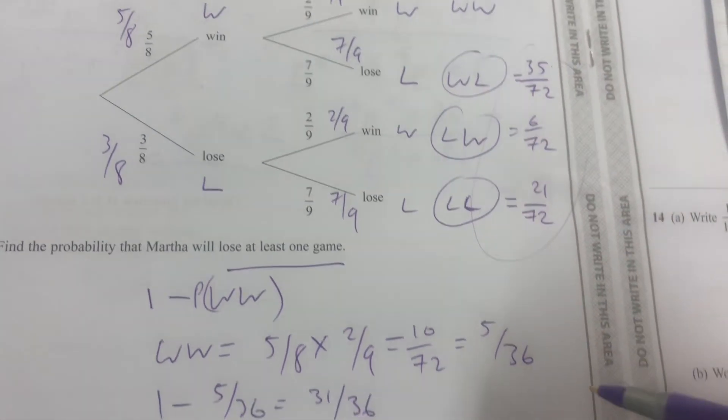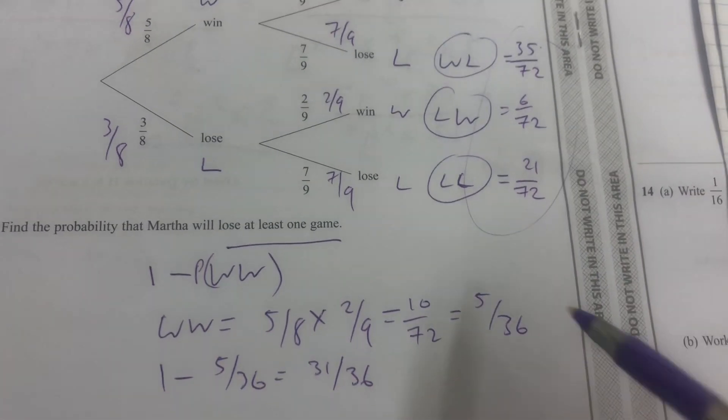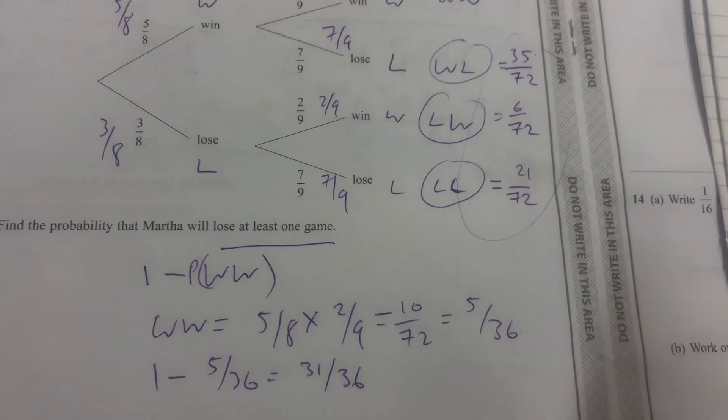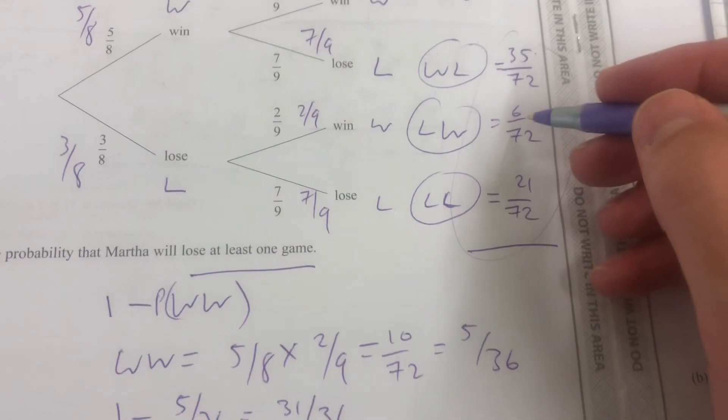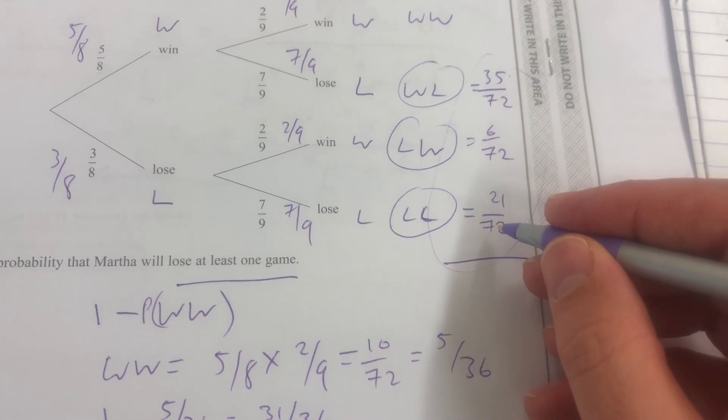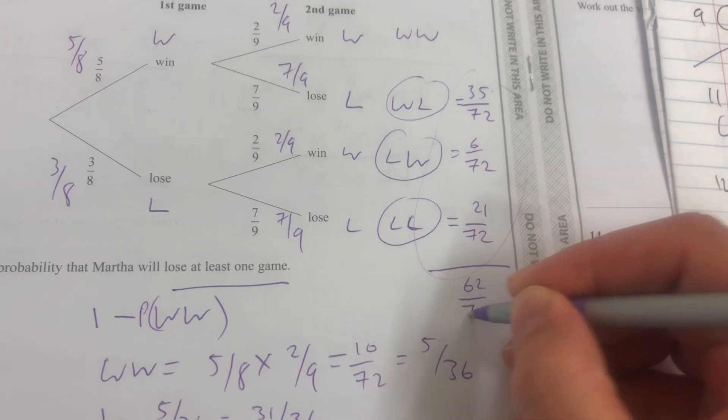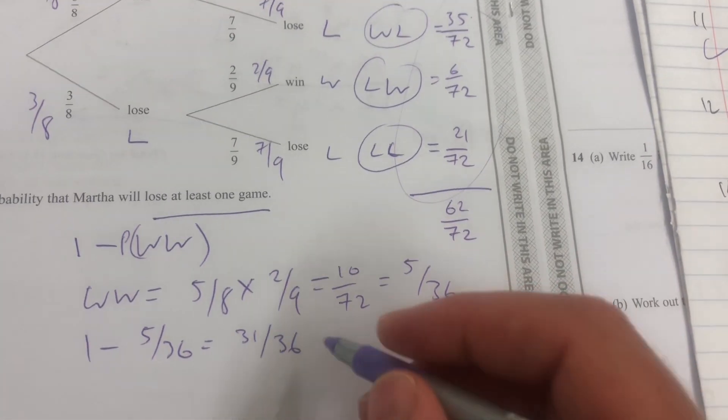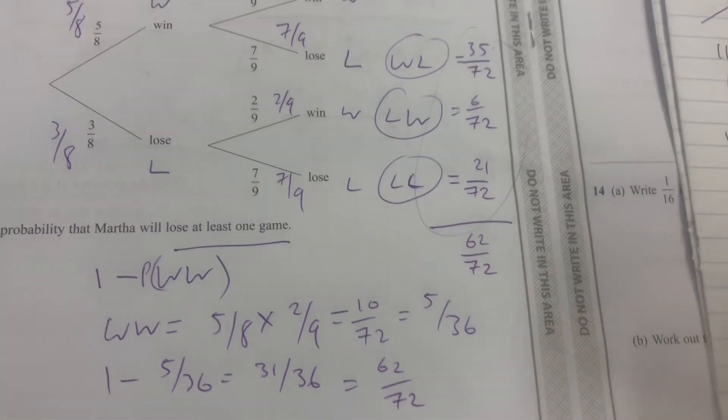Now those should add up to, as well as this should add up to one as a whole. So let's add those three up. 35 plus six is 41, 41 plus 21 is 62 over 72. And I'm going to turn this one, and that's exactly what this is here, 62 over 72.